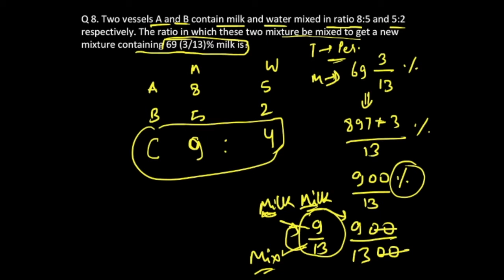...in what ratio they are being mixed. So we'll take up the quantity. The quantity of milk over here is 8 upon 8 plus 5, which is 13. Here it is 5 upon 7, 5 upon 5 plus 2.